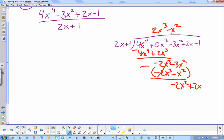And another order. Negative x. Negative x times 2x gives us negative 2x squared. Negative x times positive 1 gives us negative x. Subtract. Those go away. 2x minus negative x gives us 3x. Bring down the minus 1.